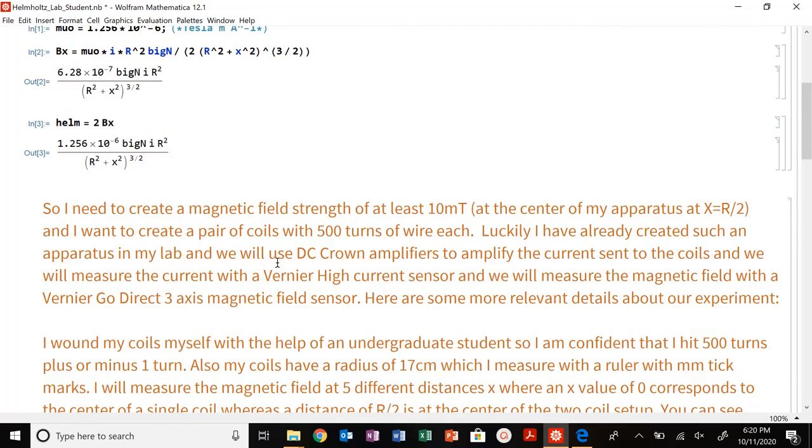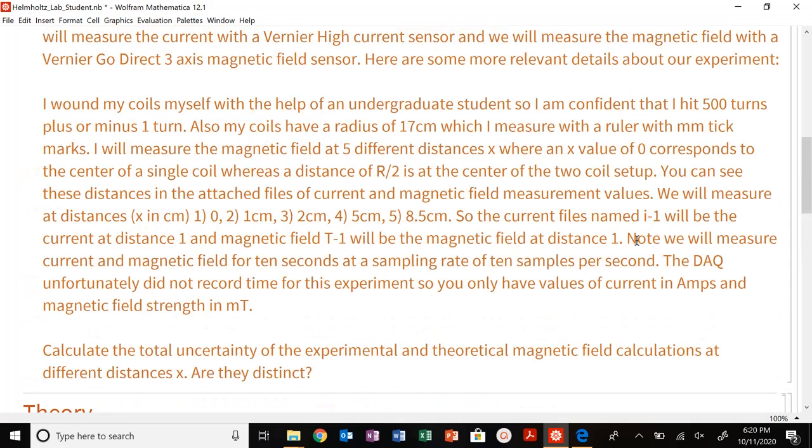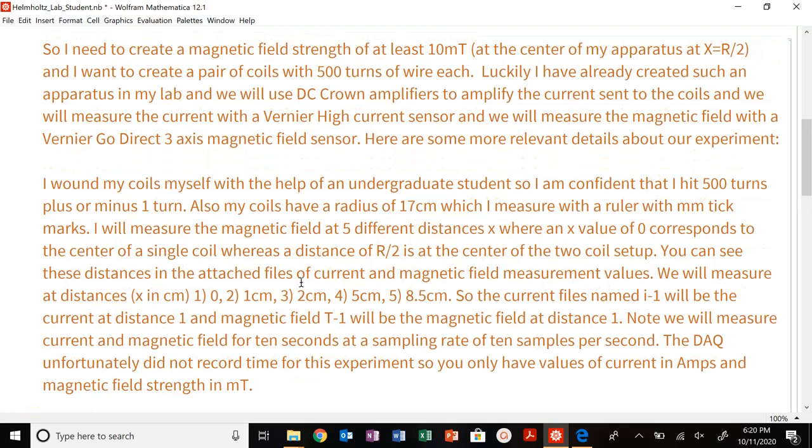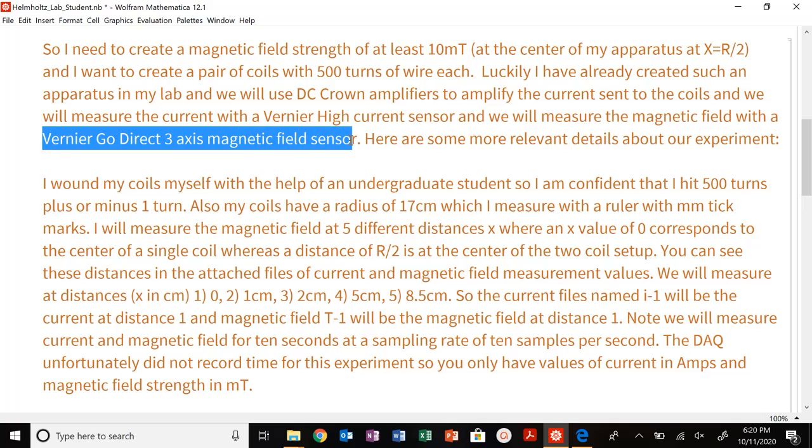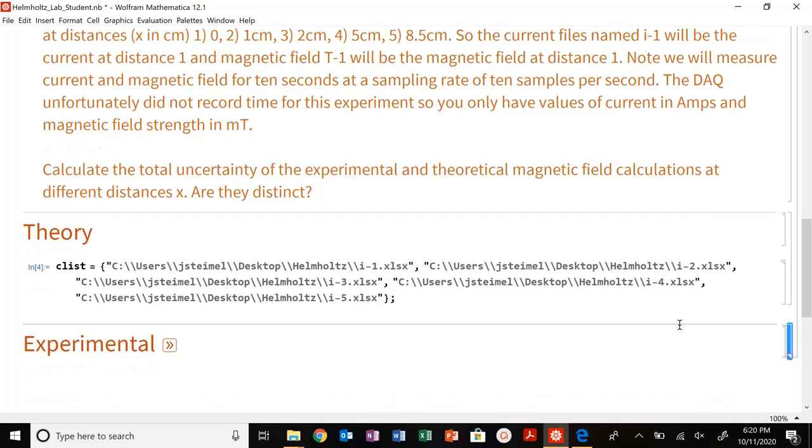Well, what am I measuring with? So the way I get these magnetic field strains is I take my Vernier GoDirect three-axis magnetic field sensor. Well, that magnetic field sensor will have some uncertainty in terms of the resolution of the magnetic field that it could measure. So I need to go look that up and plug that in in order to get those values. So that's experimental.